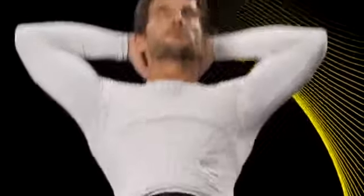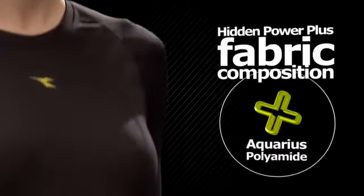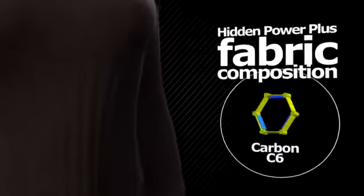One of the fundamental decisions that was made during the creation of Hidden Power Plus fabric was to bring together for the very first time holopolypropylene, Aquarius polyamide, and carbon C6.